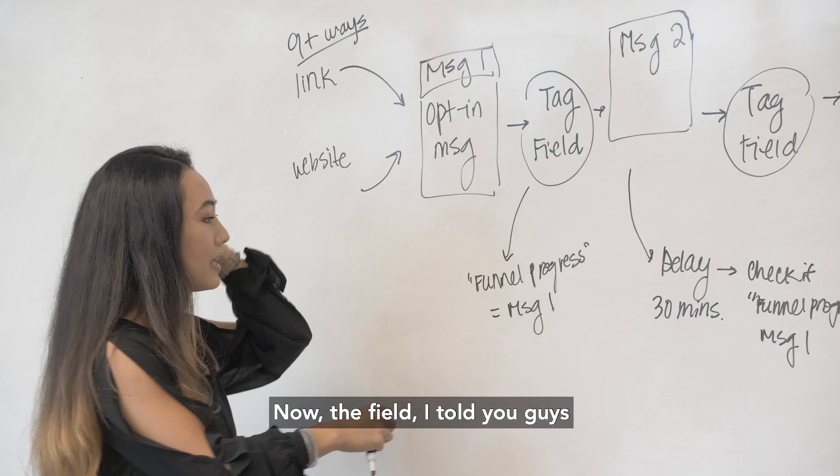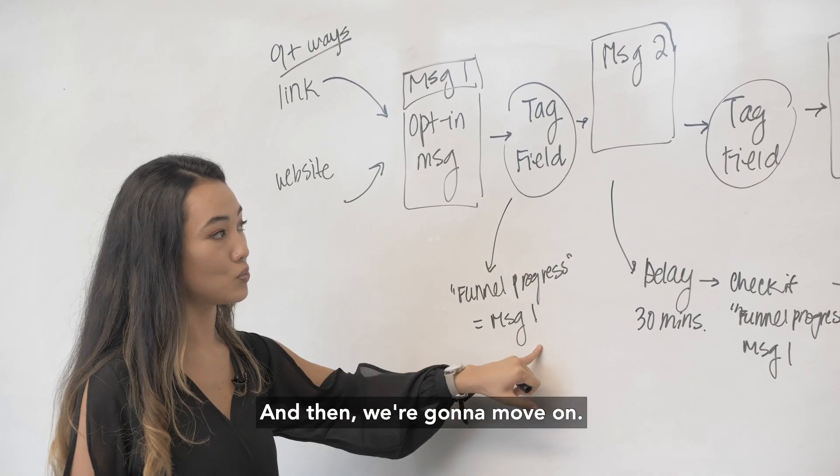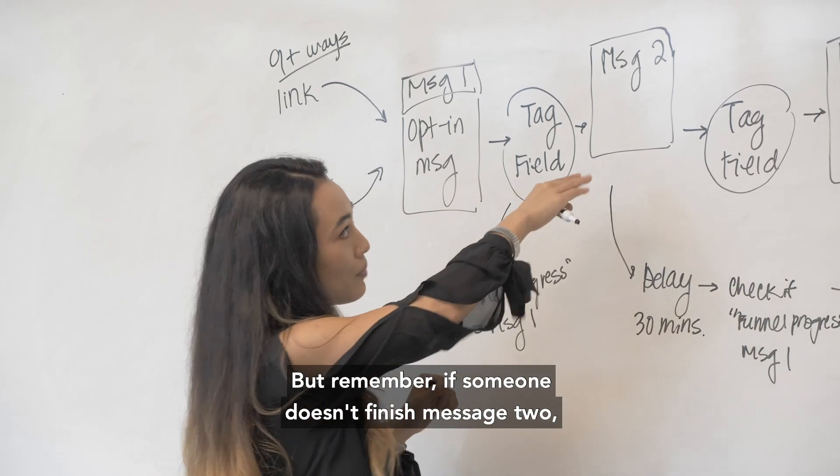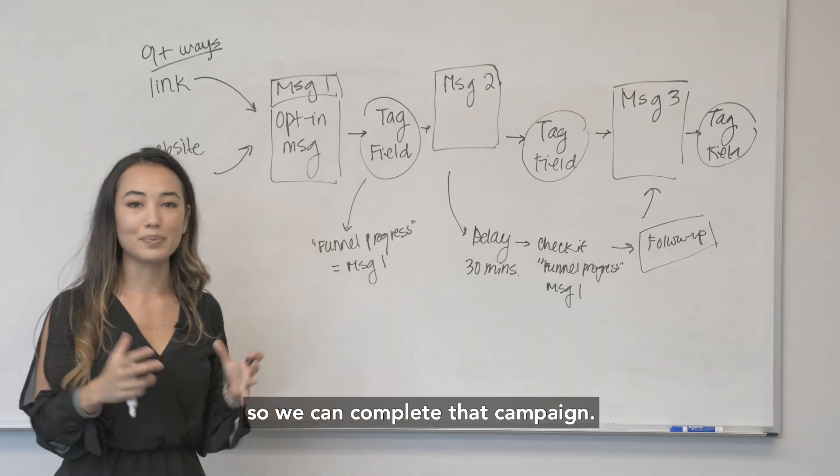Now the field I told you guys we're going to call funnel progress and we're going to make that value message one and then we're going to move on. But remember if someone doesn't finish message two, we're going to follow up with them and then send them to message three so we can complete that campaign.